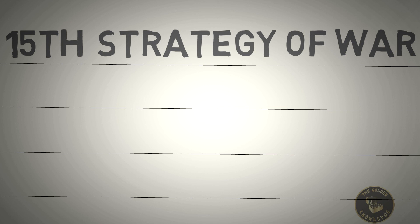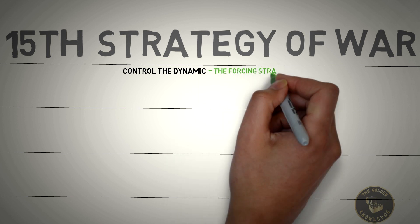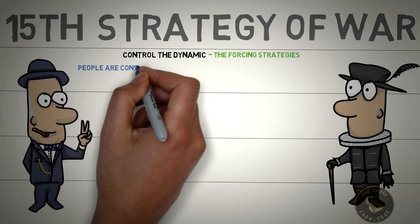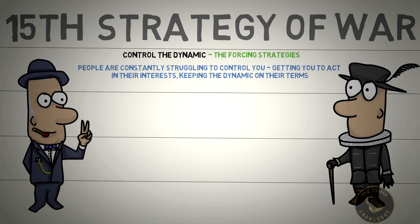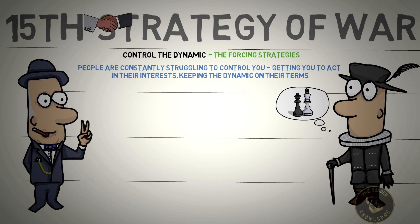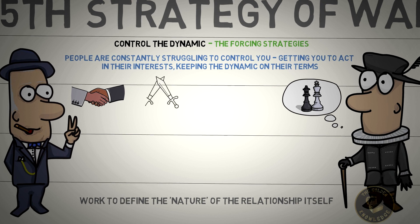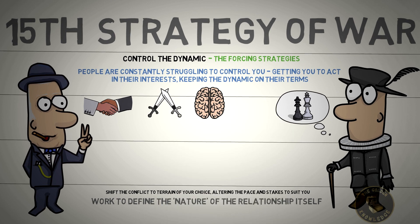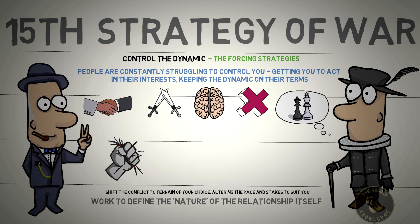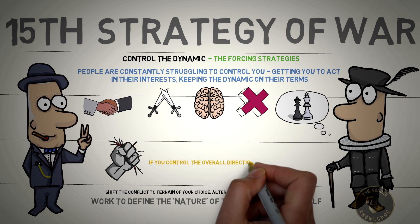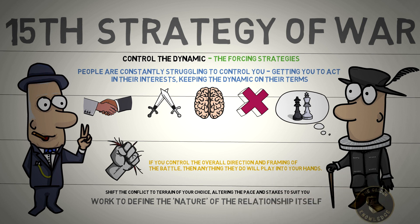One way Mosley achieves this is by using the 15th strategy of war: Control the Dynamic — the forcing strategies. People are constantly struggling to control you, getting you to act in their interests, keeping the dynamic on their terms. The only way to get the upper hand is to make your play for control more intelligent and insidious. Instead of trying to dominate the other side's every move, work to define the nature of the relationship itself. Shift the conflict to terrain of your choice, altering the pace and stakes to suit you. Maneuver to control your opponent's minds, pushing their emotional buttons and compelling them to make mistakes. If necessary, let them feel that they are in control in order to get them to lower their guard. If you control the overall direction and framing of the battle, then anything they do will play into your hands.